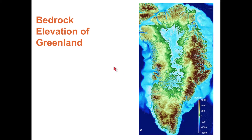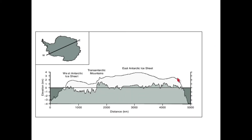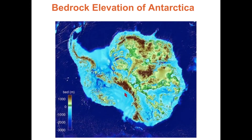If we magically erased all the ice, much of the interior of Greenland is well below sea level. The same is true in Antarctica — much of West and East Antarctica is below sea level because of the weight of the ice pushing it down. If we removed all the ice, much of Antarctica's rock surface would be well below sea level.